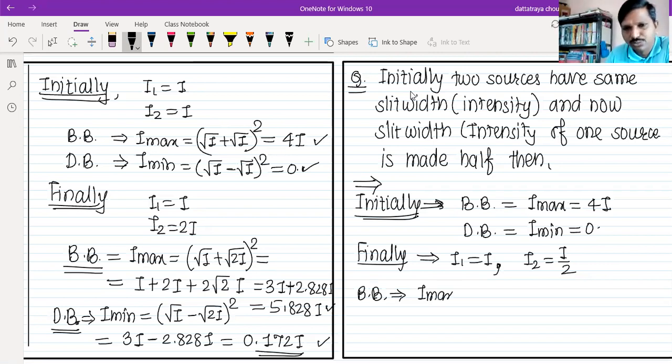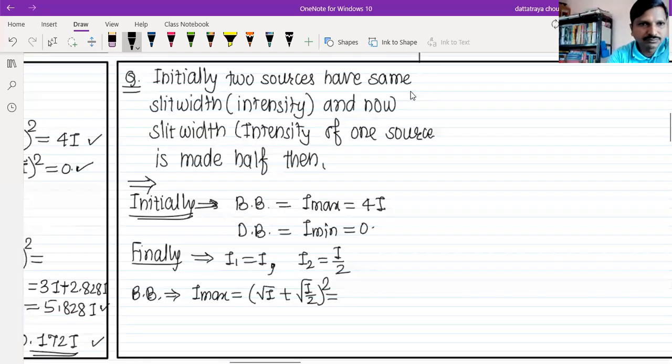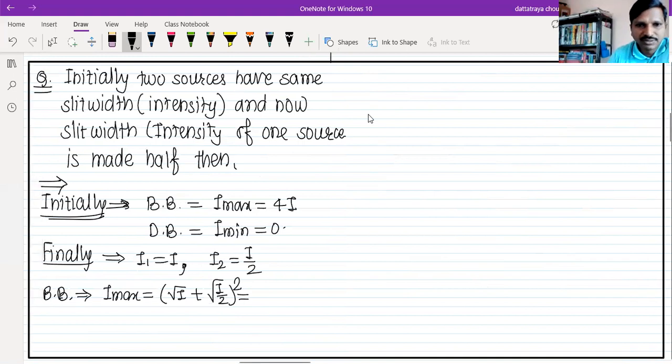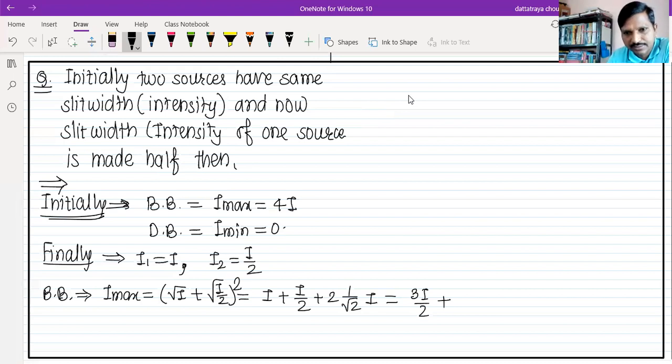IMAX is equal to (√I + √(I/2))². Doing the expansion, I plus I/2 plus 2(1/√2)I. First term square plus second term square plus 2√I into √(I/2). 2 root times, so 1/√2, 3I/2 plus 2 into 1/√2, which is 0.707.